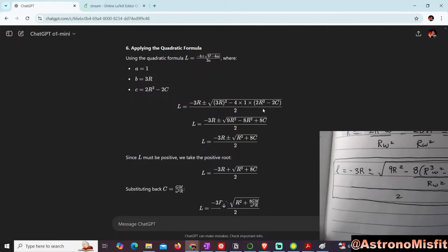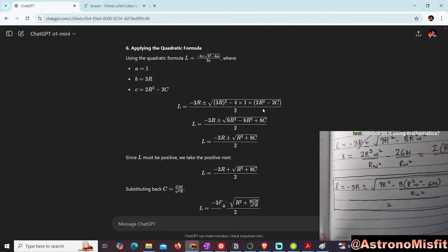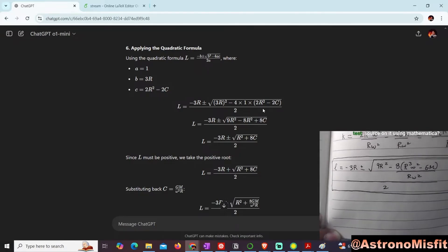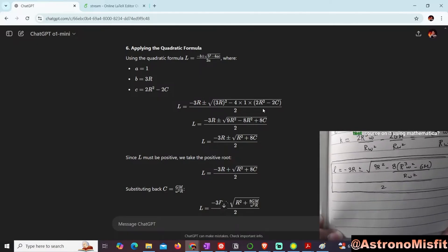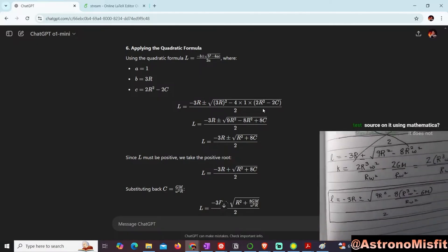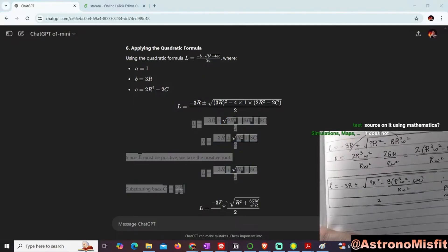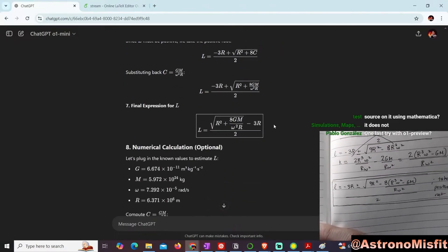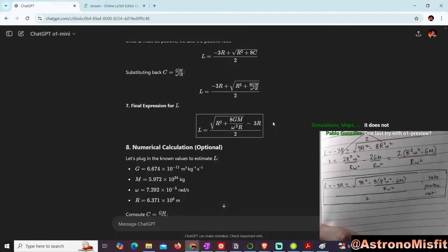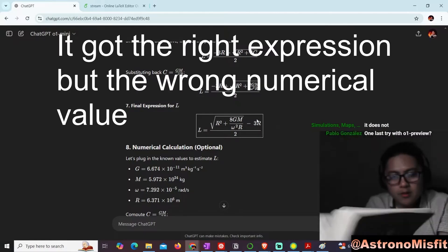But I'm getting negative 3R plus or minus √(9R² - 8R²)... Let's see here. Ah, it looked really close, but I think it didn't quite get it. Okay, what is it missing here?